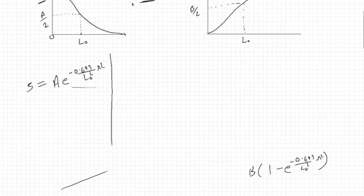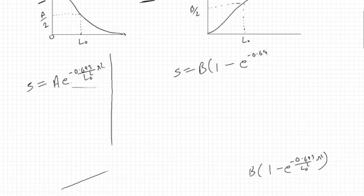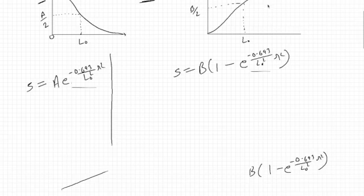So the second part answer is: s = B · (1 - e^(-(0.693 / l₀²) · r²)). That is the solution for the second transformation function.